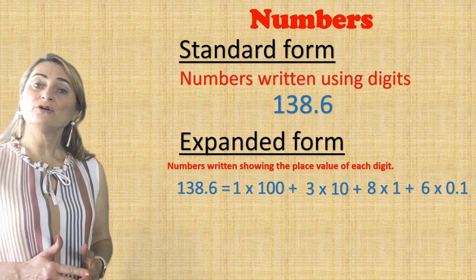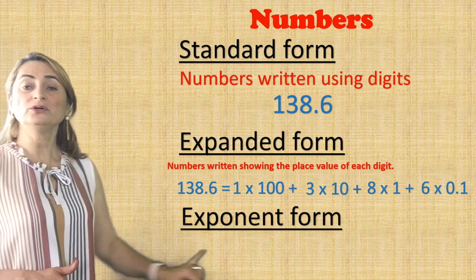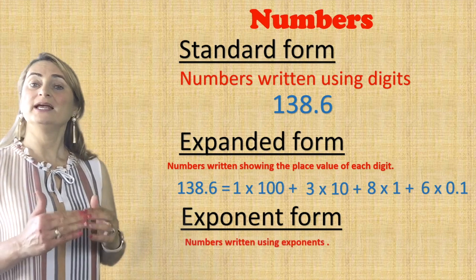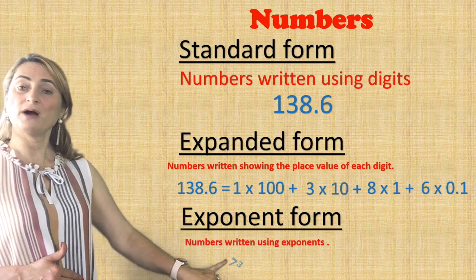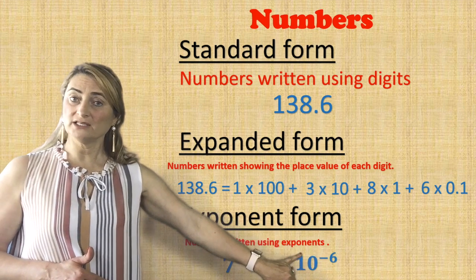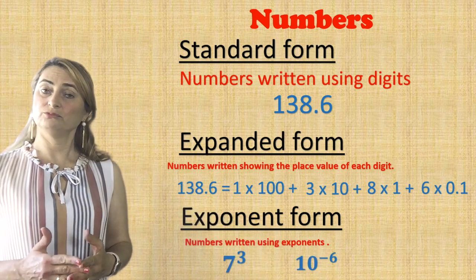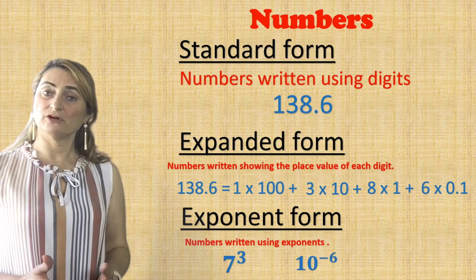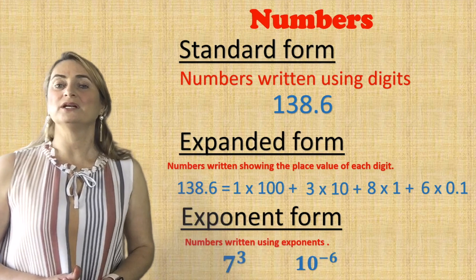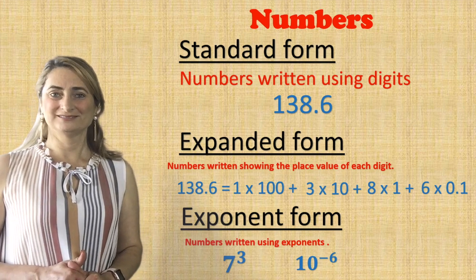Another form we learned last lesson is exponent form. Exponent form uses a base and exponent, like seven to the power of three or even ten to the power of negative six. Some of the lessons we learned before explain that a negative exponent only means small numbers between zero and one.